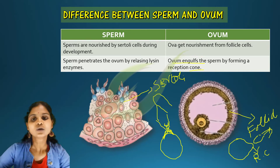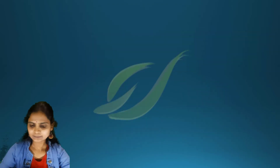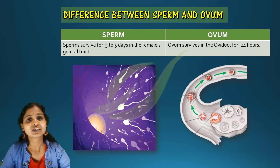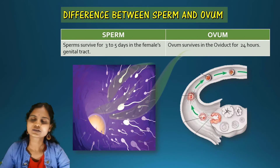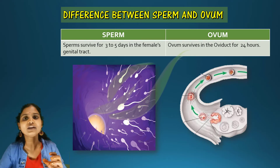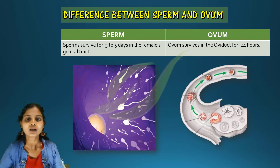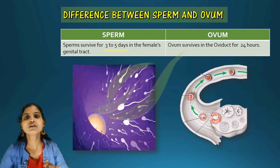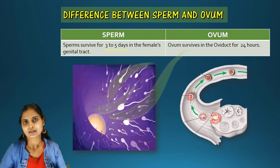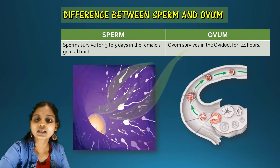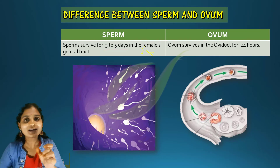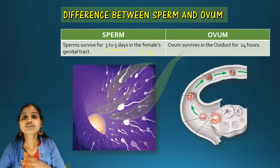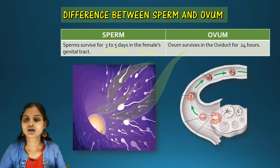When sperms enter the female reproductive tract — the fallopian tube — they remain viable for three to five days. However, within one day the sperm has the highest capability to fertilize an ovum if one is present. The ovum can survive in the oviduct for only 24 hours.